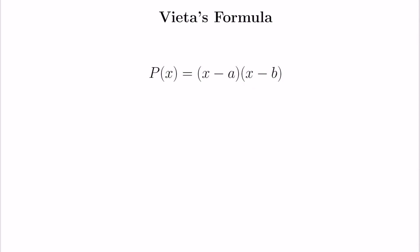So if we expand this we'll get x squared, and then we'll get minus a and minus b for the x coefficient, and then ab for the constant coefficient. We see we have negative of the sum of the roots here and the product of the roots over here.